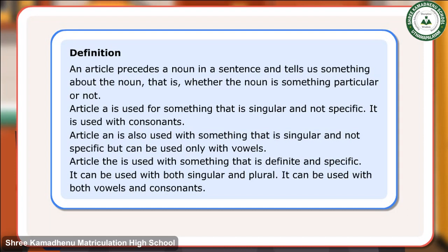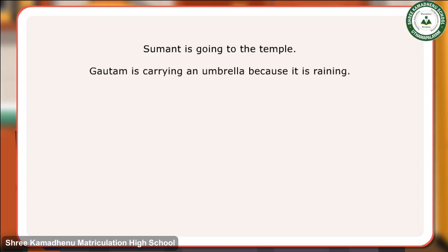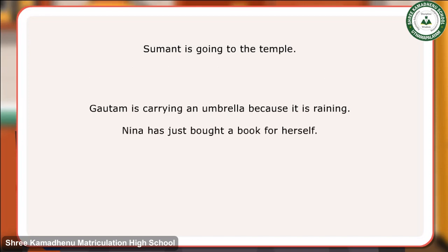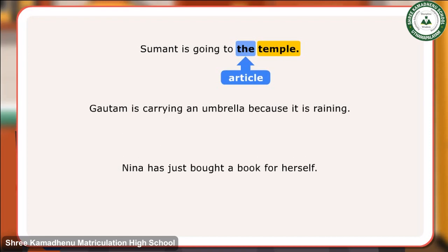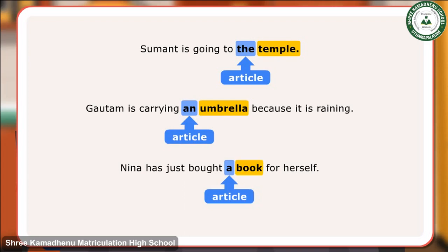Let us look at a few sentences. Sumanth is going to the temple. Gautam is carrying an umbrella because it is raining. Nina has just bought a book for herself. In the first sentence, THE is an article referring to a particular temple. In the next sentence, AN is an article referring to any single umbrella. In the third sentence, A is an article referring to a single book which is not specific.